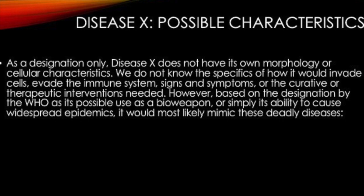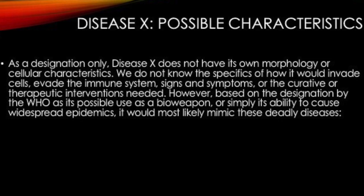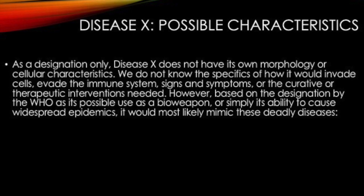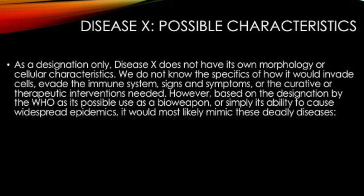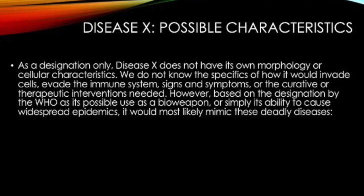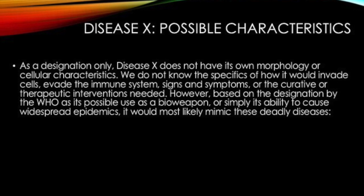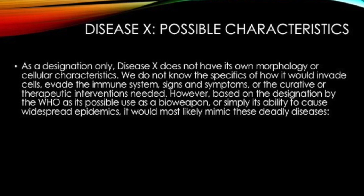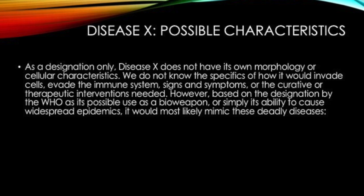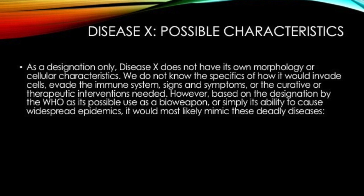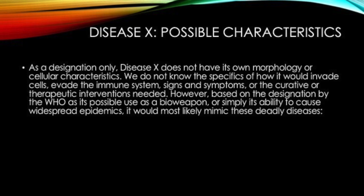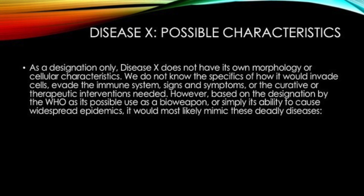Disease X possible characteristics. As a designation only, Disease X does not have its own morphology or cellular characteristics. We would not know the specifics of how it could invade cells, evade the immune system, signs and symptoms, or the curative or therapeutic interventions needed. However, based on the designation by the WHO, as its possible use as a bioweapon, or simply its ability to cause widespread epidemics, it would most likely mimic these deadly diseases.